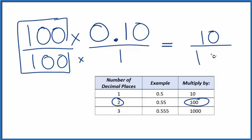So 100 times 1, that is 100. And now we have whole numbers. And now we can simplify this fraction. 10 goes into 10 one time, and 10 goes into 100 ten times.